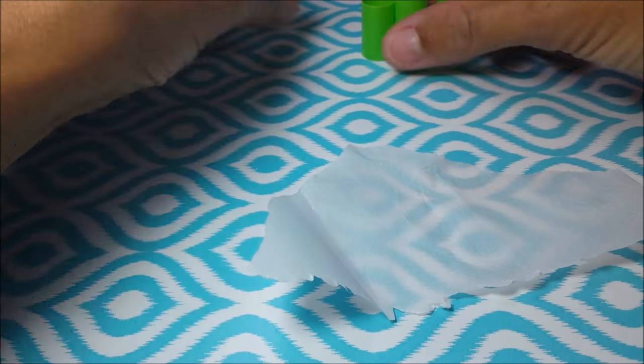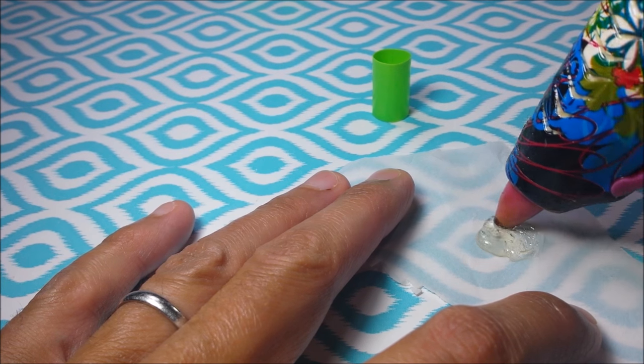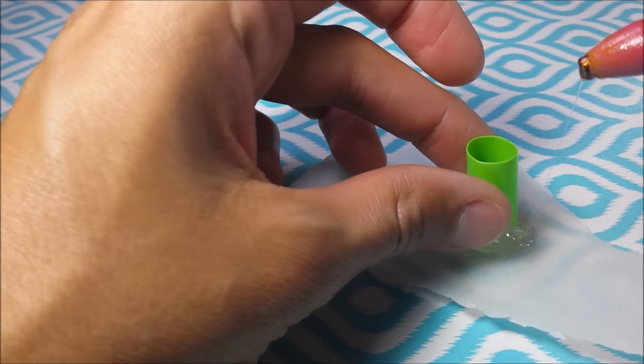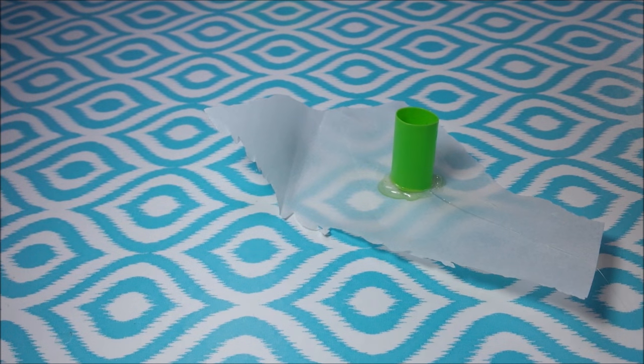Lay out a piece of parchment paper and use my hot glue gun to seal the bottoms. So just pouring out a bit of hot glue and allowing to dry.